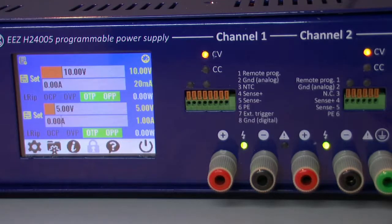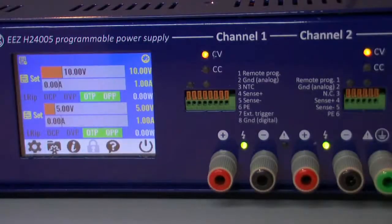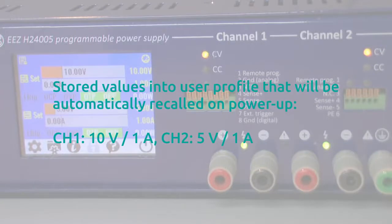But this type of operation could be dangerous in some cases. Let's say that I started with these values like 10V 1A, 5V 1A on the second channel.